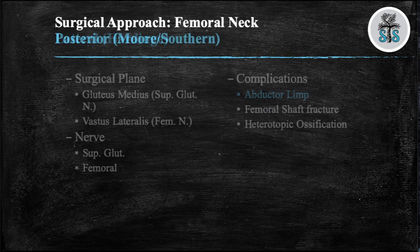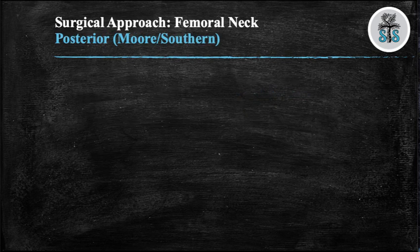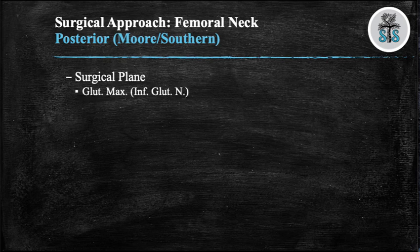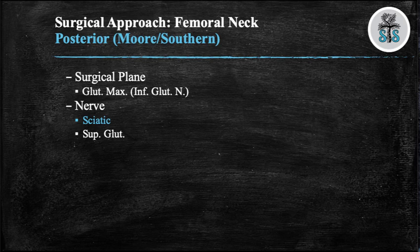The final surgical approach is the Southern approach, also called the Moore approach or posterior approach. There is no internervous plane, as the surgical dissection is through the gluteus maximus. The nerve most at risk is the sciatic nerve, but also the superior gluteal nerve. It is important intraoperatively to monitor for any foot twitches while performing your dissection, as this indicates proximity to the sciatic nerve. If the sciatic nerve is damaged, it will lead to foot drop. Several arteries are also at risk in this approach.